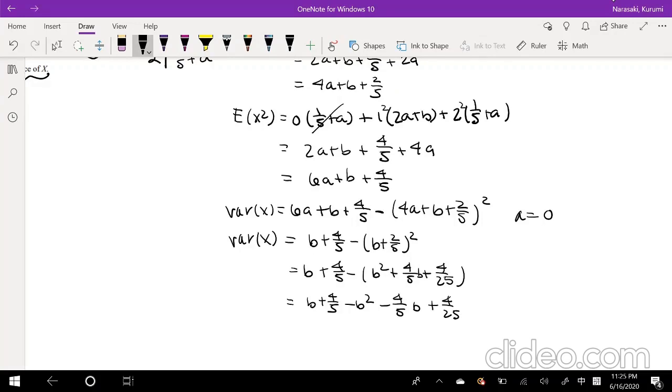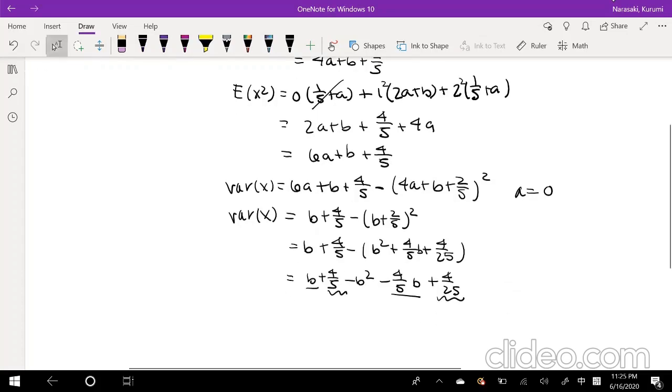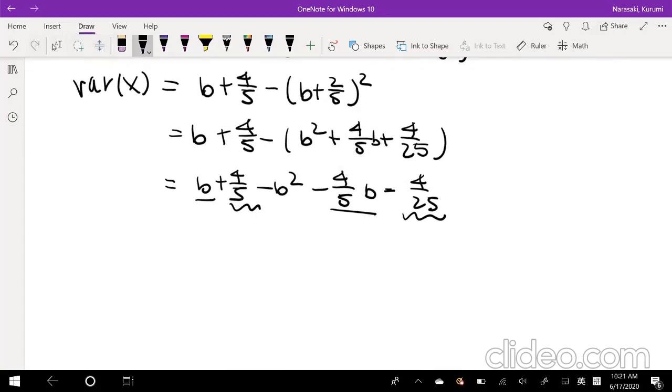I think we're good. Does anything cancel? I guess this could be simplified. These two could be together, and these two could be together. Okay, so I'm going to put those two values together. So it becomes 1 fifth b plus, this is 4 times 5, so that's 20 minus 4, 16 over 25 minus b squared.